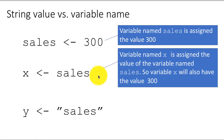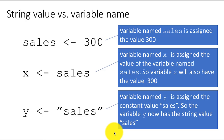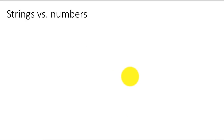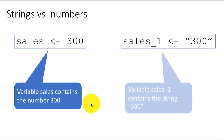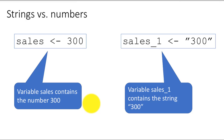To reiterate: sales without quotes is a variable, while "sales" with quotes is a constant. So the variable named y is assigned the constant value "sales" — y now has the string or character value sales. Similarly, strings versus numbers: suppose I say sales is 300 and sales_1 is assigned the value "300" but within quotes. So now sales contains the number 300 and sales_1 contains the string 300, the character value 300.